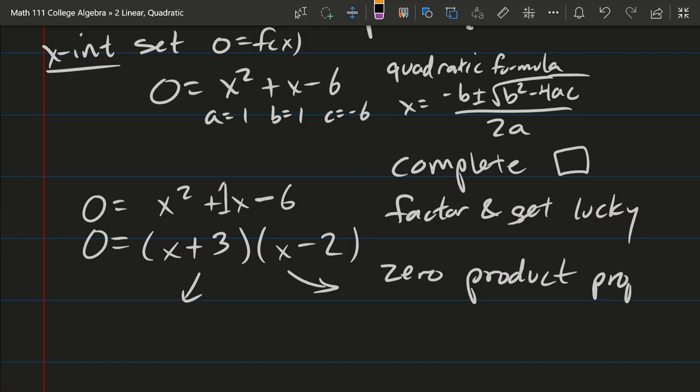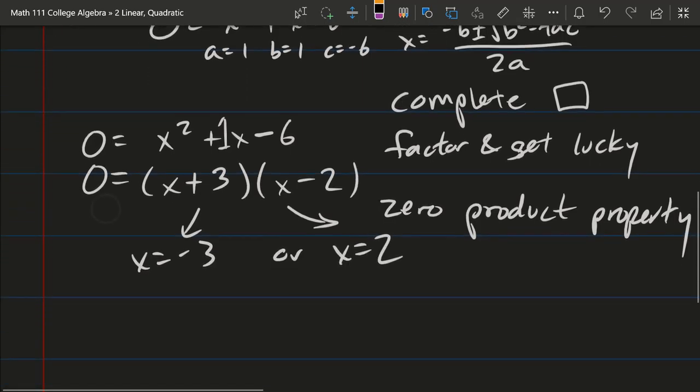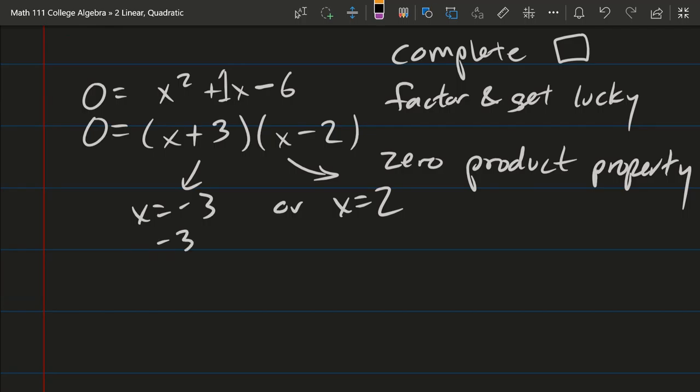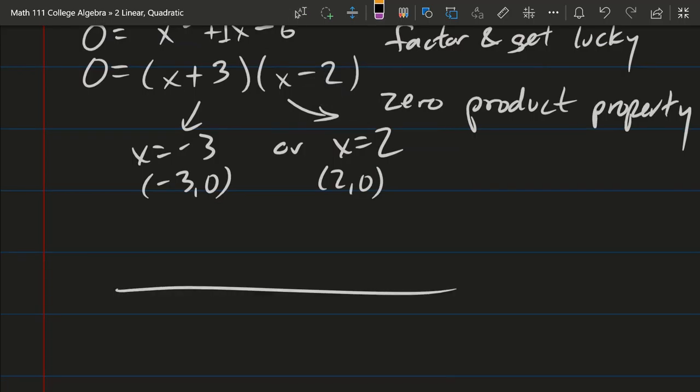So we just checked our work, it's good. We get 2 x-intercepts, one's here and one is here. This is the zero product property. When two things multiply to make zero, then one or both of those are zero. So this means x equals negative 3 or x equals positive 2.